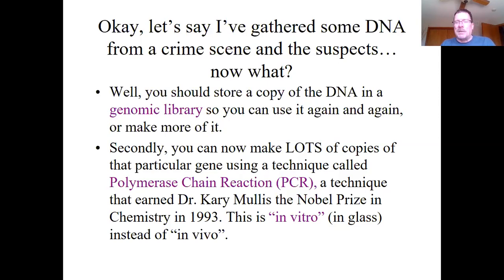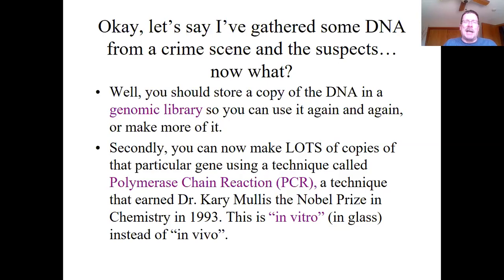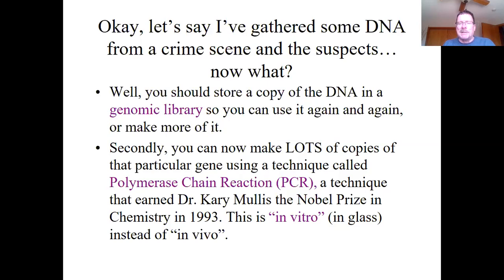Second thing: PCR — this is a big deal, really a boom in technology. Polymerase chain reaction is really using DNA's own properties of copying itself to make lots of it. This is when forensics really jumped — when you can take even the smallest amount of DNA sample and expand it to a really workable amount. In 1993, Dr. Mullis won the Nobel Prize for doing it in vitro, as opposed to trying to do it in vivo in plasma insertions.